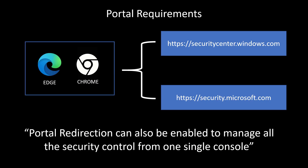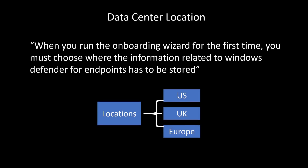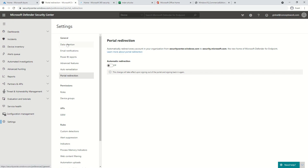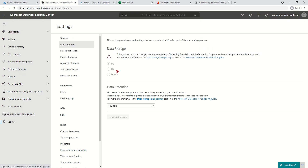The next thing is related to a step that must be taken before onboarding a device: choosing the data center location. When you run the onboarding wizard for the first time, you get the option to choose where the data should be saved. The three available locations are US, UK, and Europe. The upper limit for data retention is 180 days, covering the telemetry that Microsoft Defender for Endpoint collects.